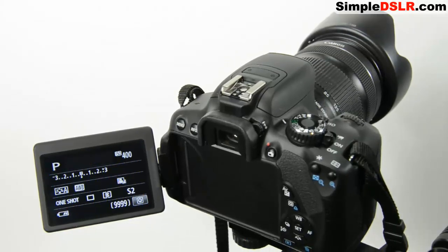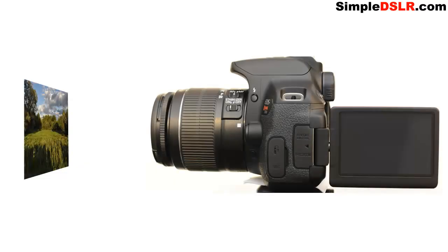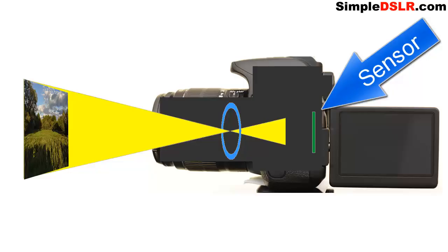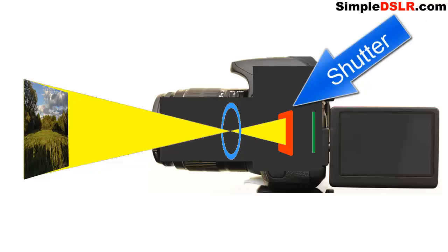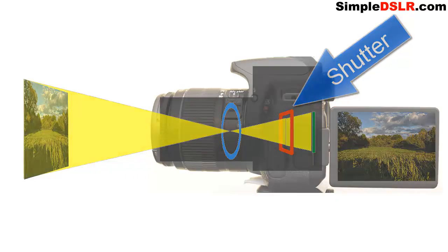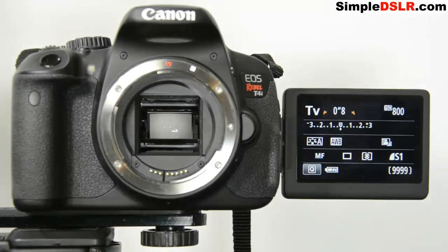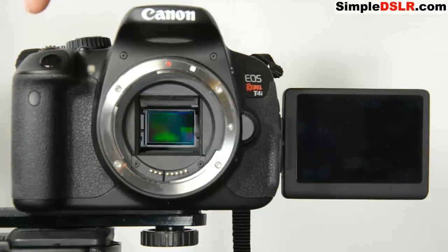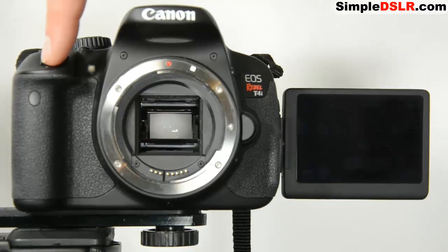Now let's go back to the shutter and shutter priority mode. The way your camera works is, all the way in the back you have an image sensor which is light sensitive. Before the digital image sensor, that was film. Right in front of that image sensor is where the shutter sits. That shutter is a curtain that opens and closes to expose that image sensor to light so that it can capture your image. To show you the shutter, I've taken the lens off this camera and you can see it there. If we take a picture, you can see that shutter opening and exposing the sensor to light.